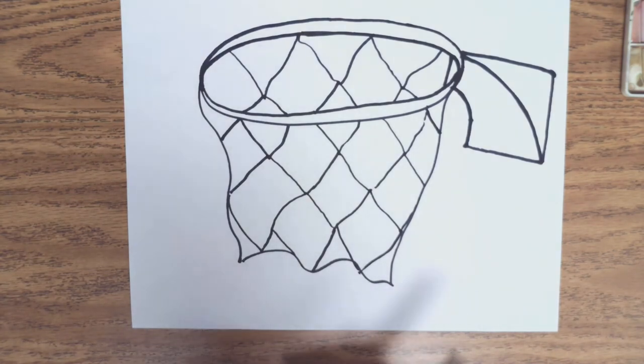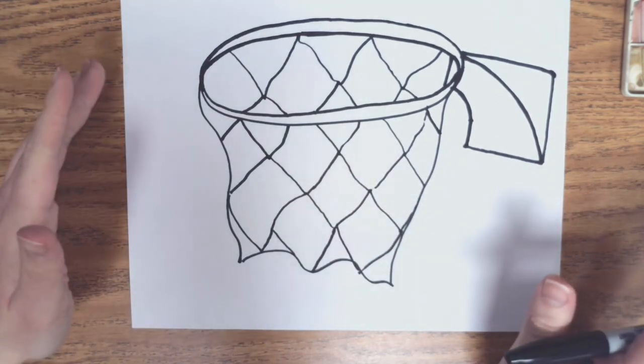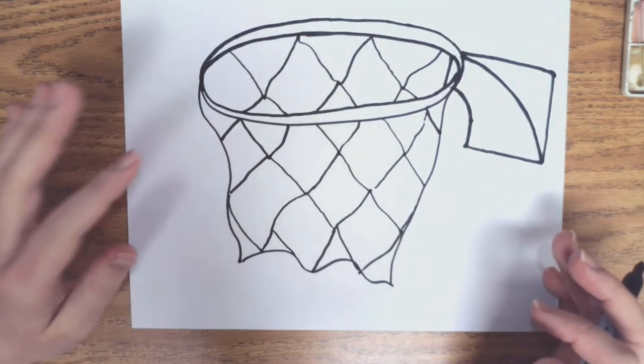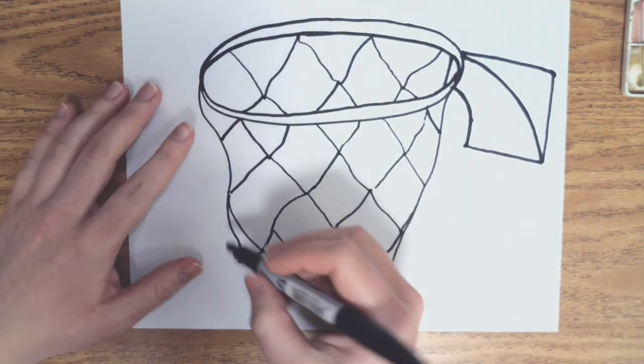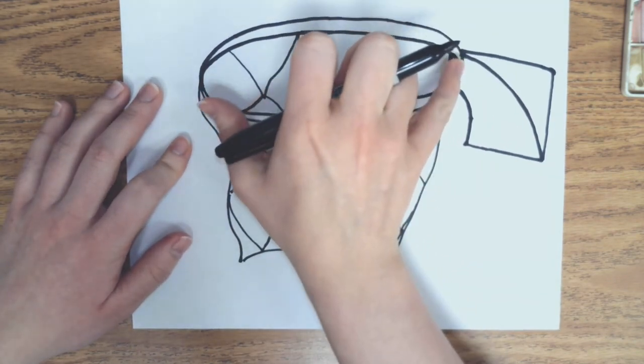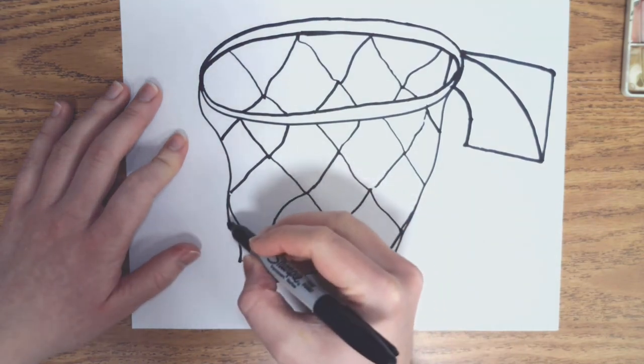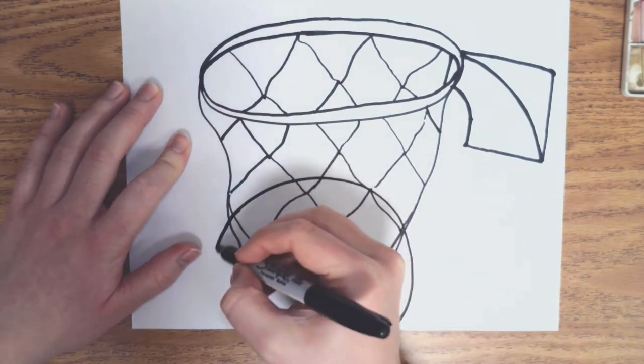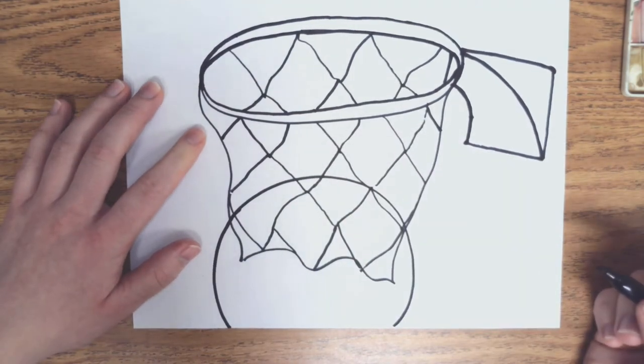Now we need our basketball. So my basketball is going to be slightly coming off the paper, and that is okay. If yours fits on the paper, great. But you do want your basketball to be a little bit wider than the hoop and the net. So you want it to be no bigger than the top of this, but bigger than the net down here. As you can see, my basketball is going to be coming off the bottom of the paper, and that's okay.